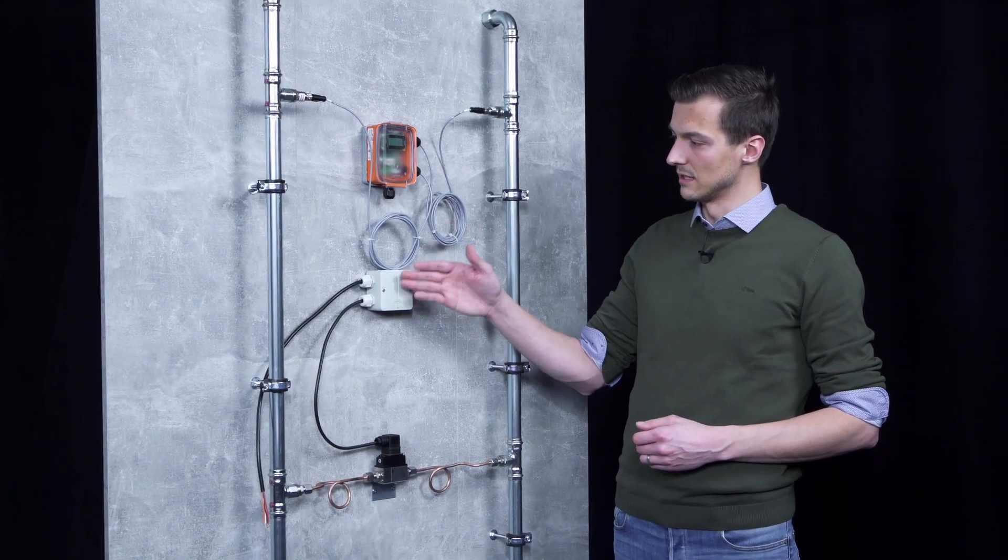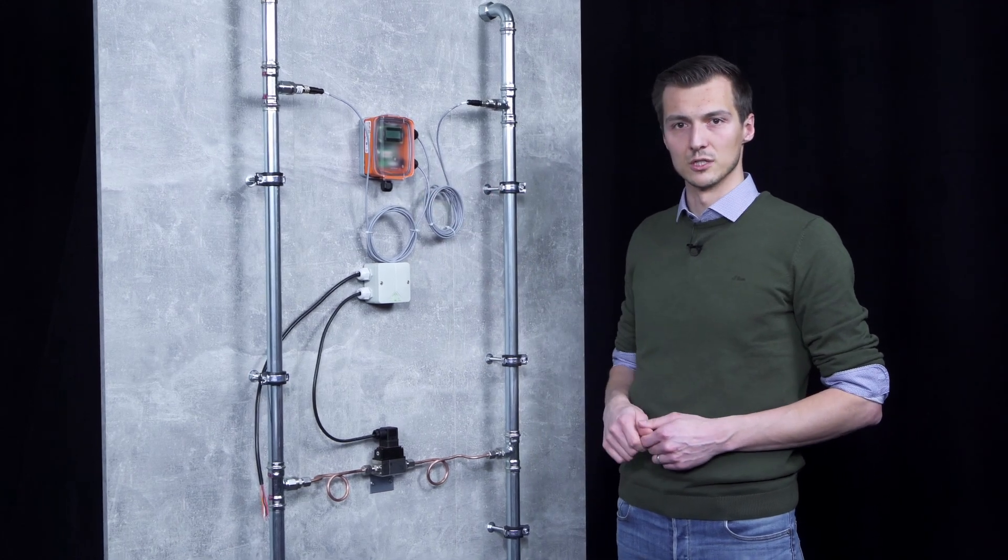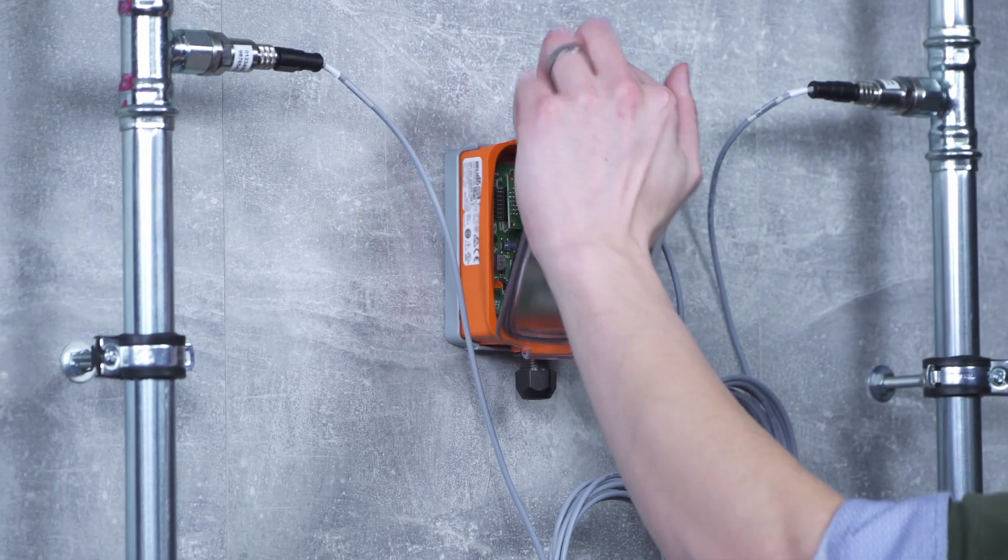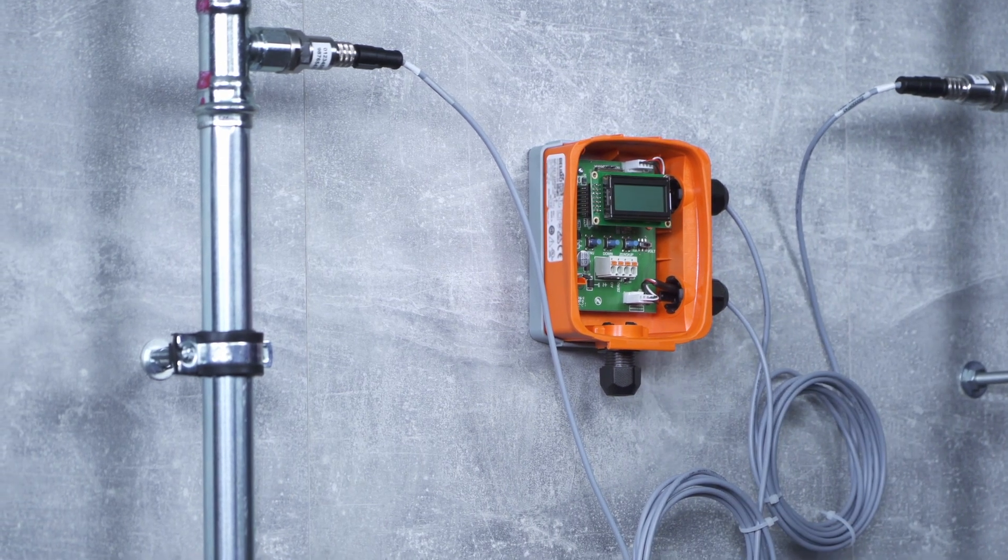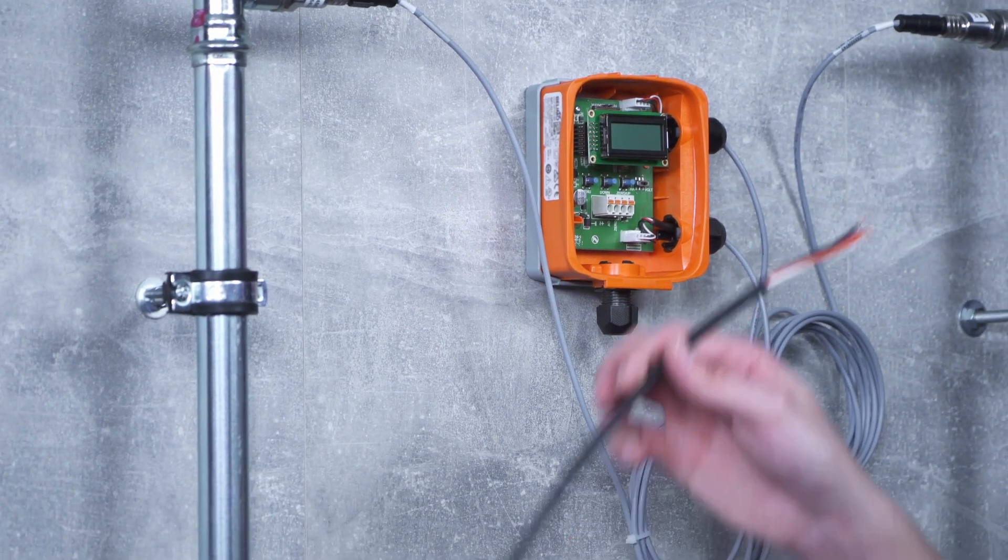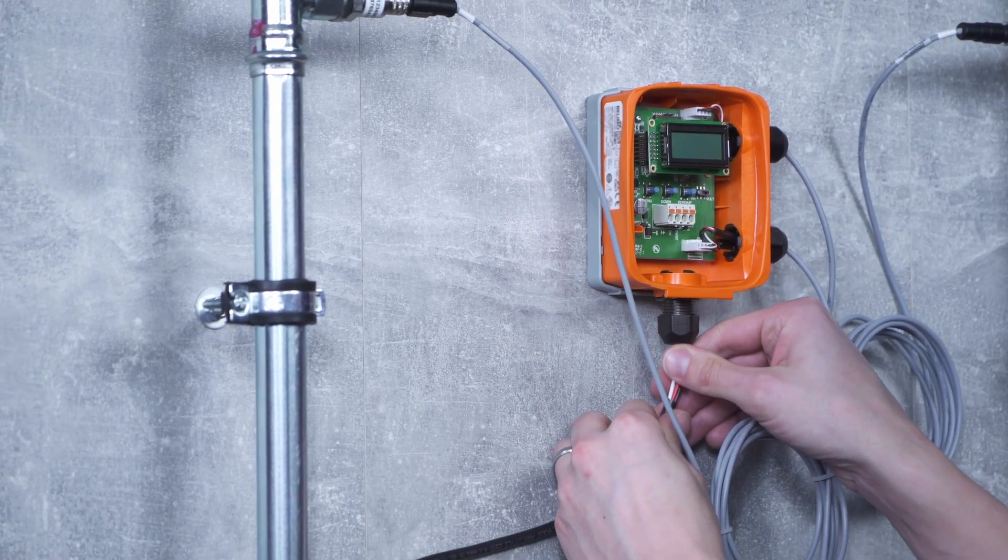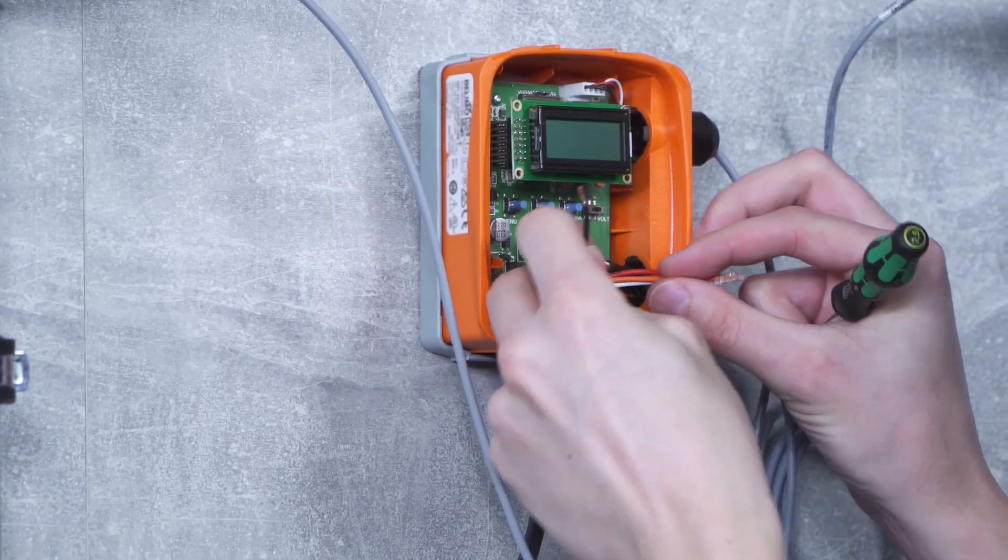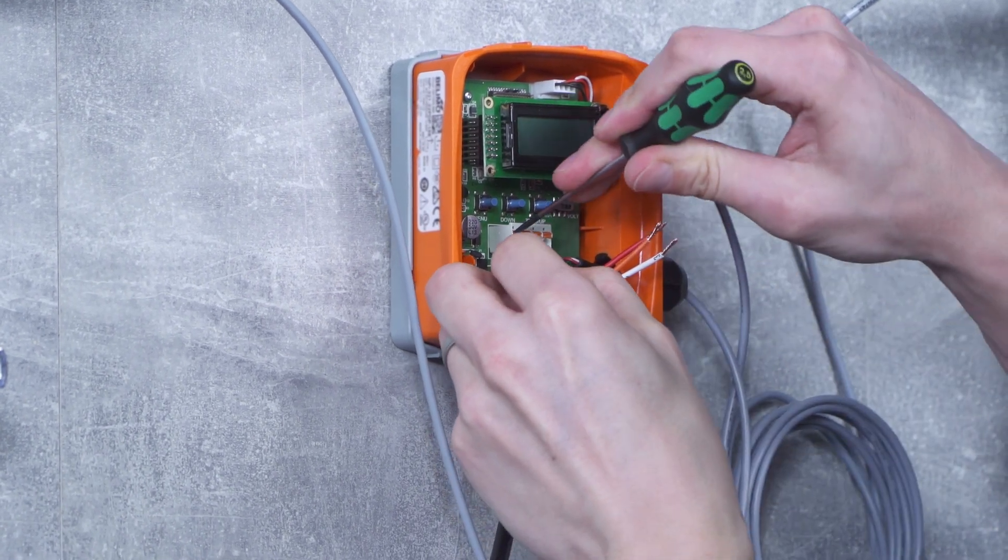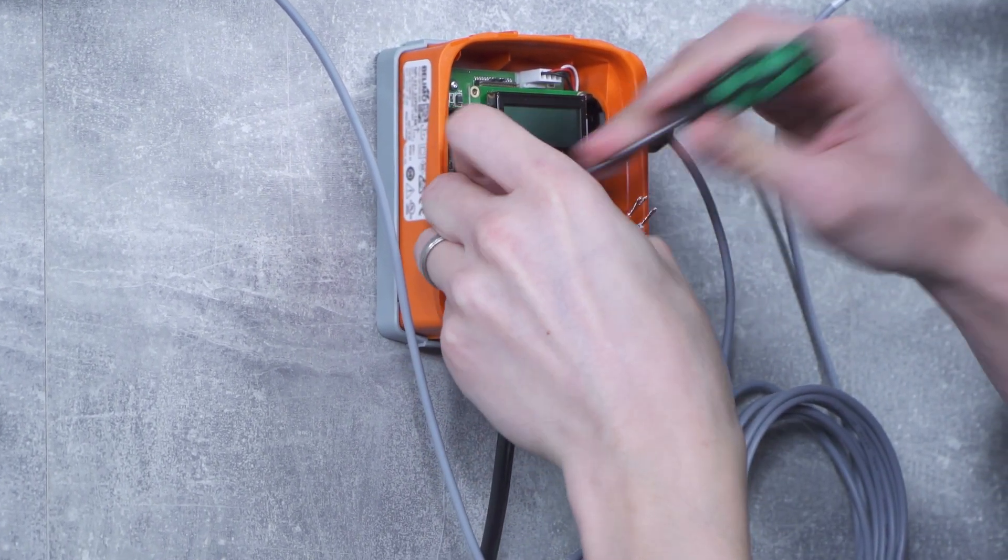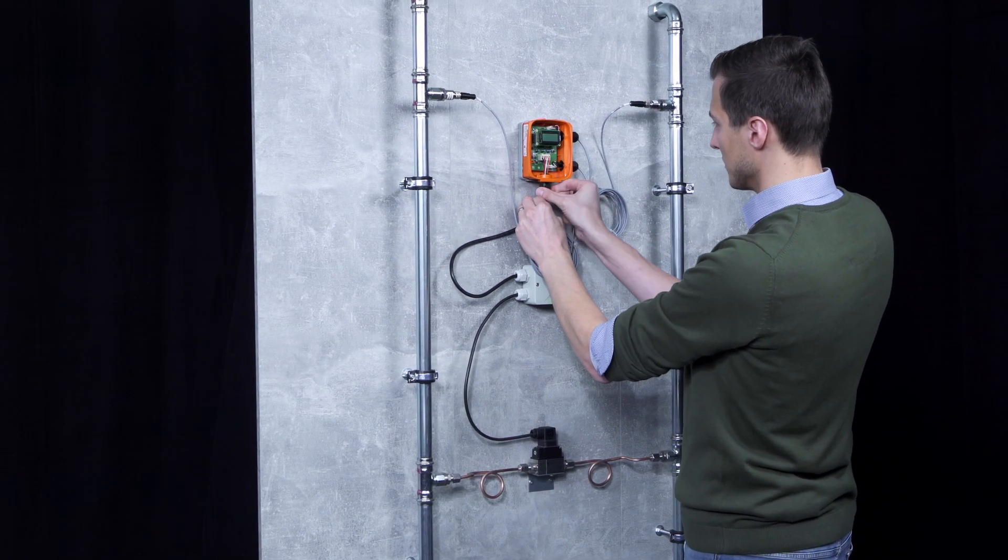The pressure transmitters are now connected to the sensor. In the next step, we will turn to the electrical installation and connect the sensor to the power supply. To do so, we first open the sensor housing and remove the cover, and then insert our connecting cable into the sensor housing. The individual cables can easily be inserted into the spring-loaded terminals with a small screwdriver. Then we tighten the strain relief and our sensor is connected.